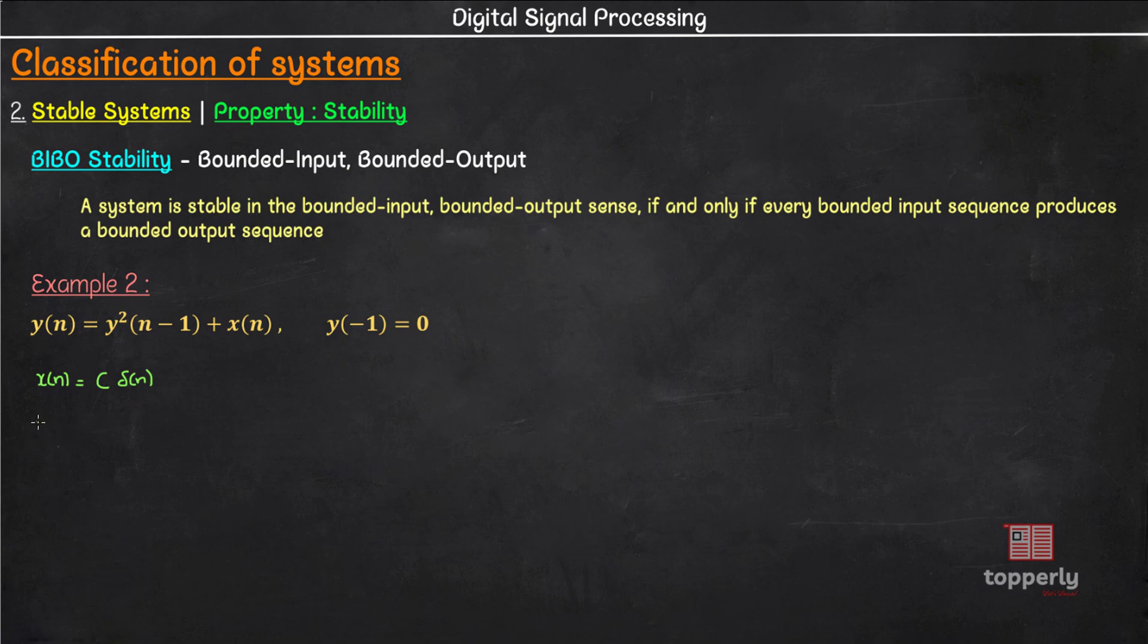...y(0) = y²(-1) + c·δ(0) which is equal to 0 + c which is c. Similarly, y(1) = y(0)² + c·δ(1) which is c² + 0 or c².